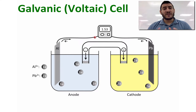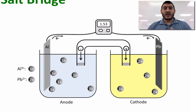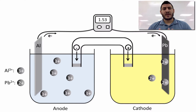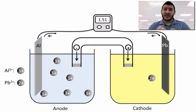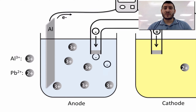The salt bridge contains a gel of an ionic compound that ensures the neutrality of each compartment. The anode compartment is becoming more positive and the cathode compartment is becoming more negative. The positive charge of the anode compartment will attract the electrons and therefore prohibit the electrons from being transferred to the cathode — and hence the role of the salt bridge.